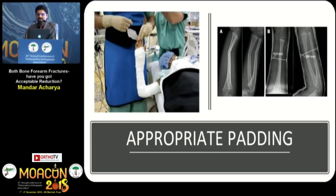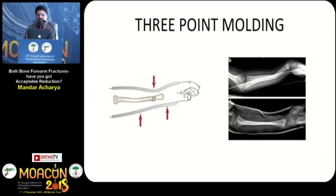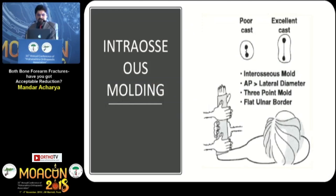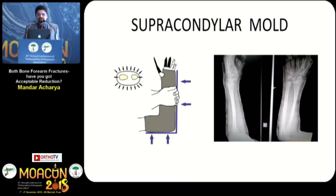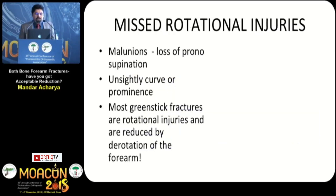As you can see in the x-rays, there is no thick padding used. There must be three-point molding at the cast and at the fracture level. There should be interosseous molding — the cast should not be cylindrical. As Samir noted, the cast index should not be more than 0.7, and there must be a supracondylar mold to prevent rotational problems.